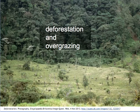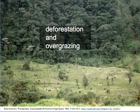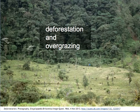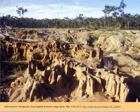Another significant threat to soils, especially tropical rainforest soil, is deforestation and overgrazing. Rainforest soil itself is very thin, and if it is cleared, the large roots that prevent runoff are not present. And if overgrazing happens on fields that are cleared, then whatever cover there is is quickly removed. These kinds of unsustainable practices quickly lead to soil depletion.